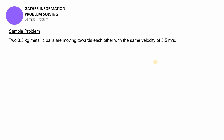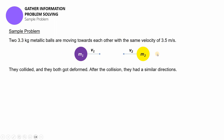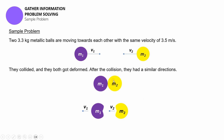For the sample problem, two 3.3-kilogram metallic balls are moving towards each other with the same velocity of 3.5 meters per second. So mass 1 and mass 2 are moving towards each other and they have the same weights and also the same velocities. They collided and both got deformed after the collision and had similar directions — in this case, they are both going towards the left, which is the negative x-axis. This is very much similar to the visualization we had in the discussion prior to this sample problem.